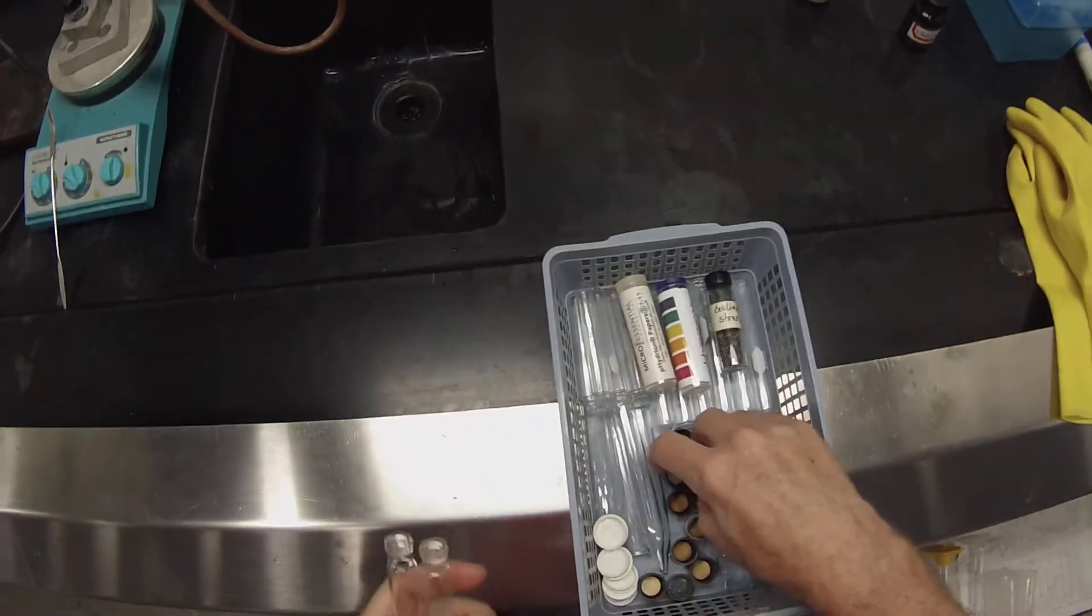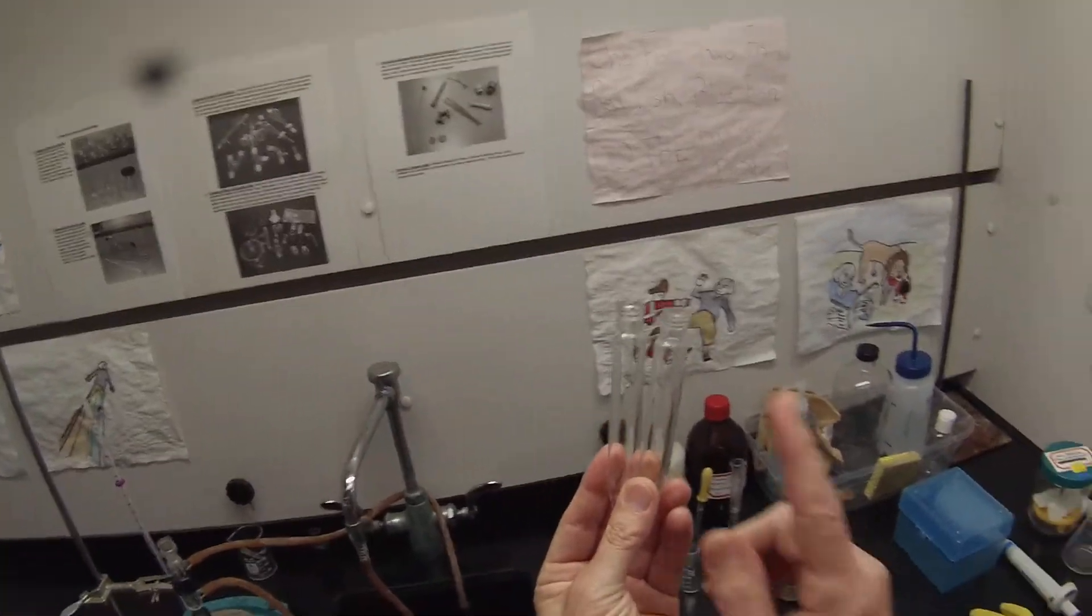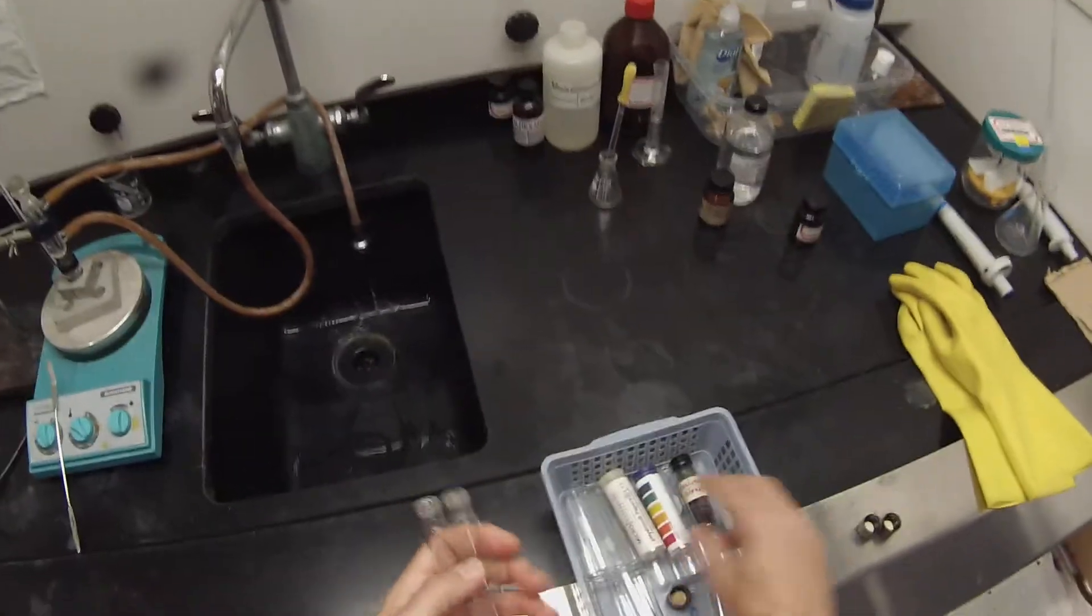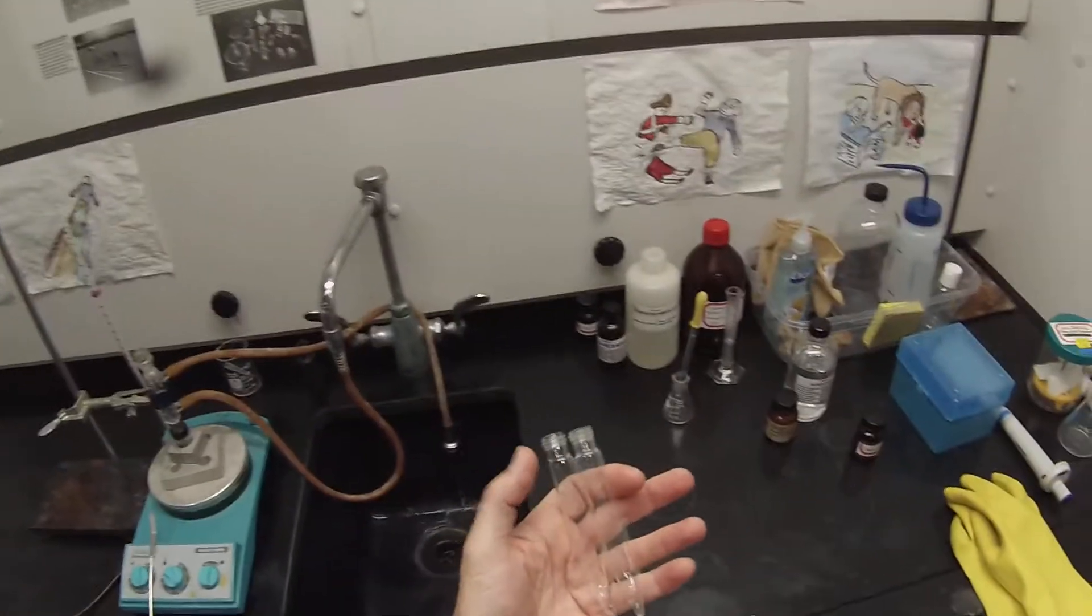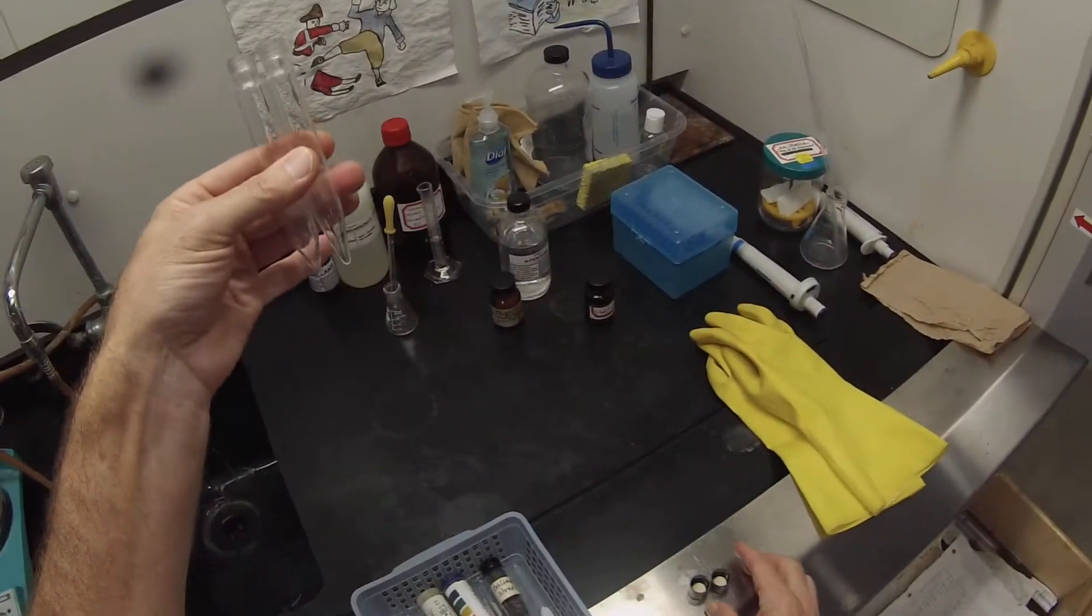But since I have the extra tubes and the extra acid, what I'm going to do is set up two. I'm going to set up one that's just going to go for the 15 seconds. I'm going to set another one where we intentionally let it equilibrate and then we'll analyze that by GC and see what the difference is.